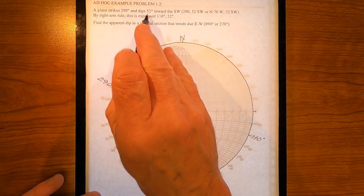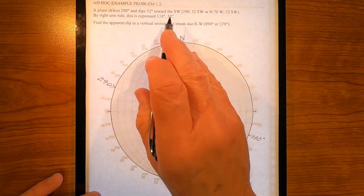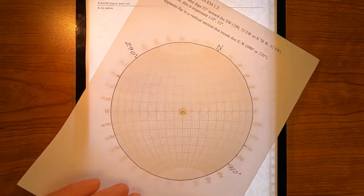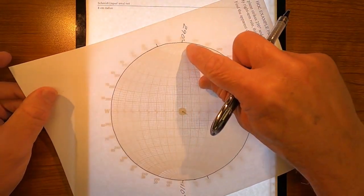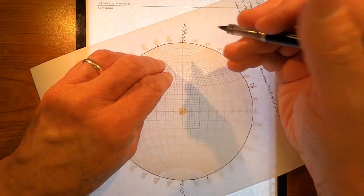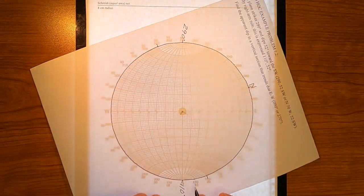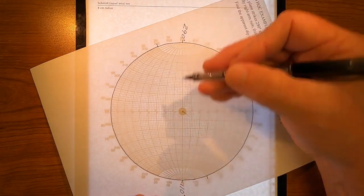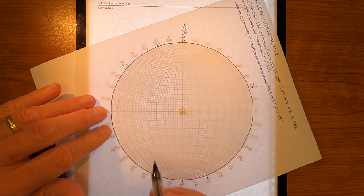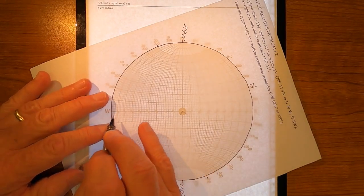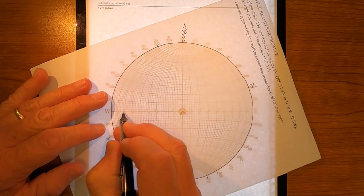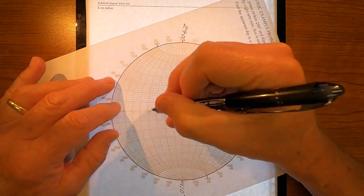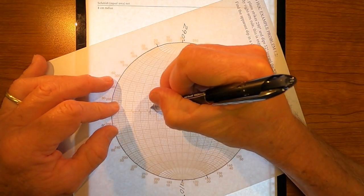It's going to be such that it corresponds to a dip here of 52 degrees, so I need to rotate my overlay to this position. You'll notice that 290 is on north, 110 is on south, further demonstrating that they're azimuth and back azimuth. I need to count in an angle of 52 degrees: 10, 20, 30, 40, 52. That will be the great circle that I trace.